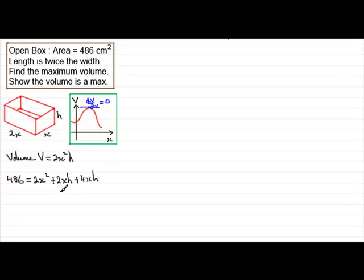And so if we simplify this, we've therefore got 486 equals 2x² plus a total of 6xh. Now we could simplify this further and divide through by 2. And if we did that, each term divided by 2 gives us 243 equals x² plus 3xh.